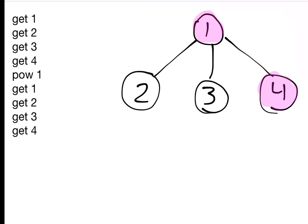Let's consider problem 877e, Danil and part-time job. In this problem, you're given a graph. In the sample input, the graph has 4 nodes. Some of these nodes are lit up and some of them are dark. In the sample, nodes 1 and 4 originally start out as lit up.